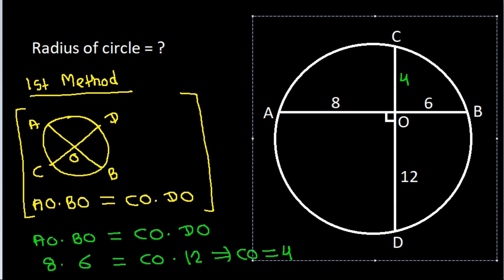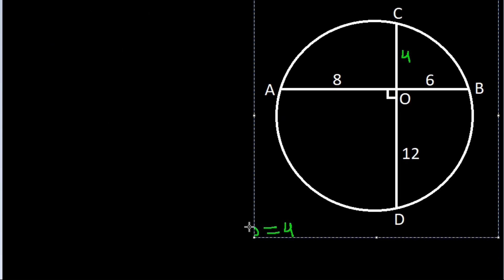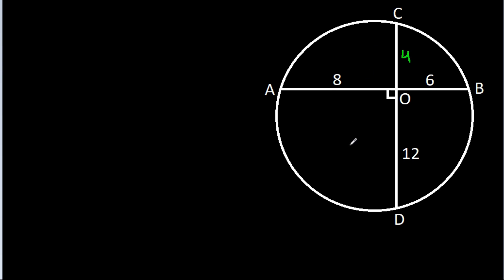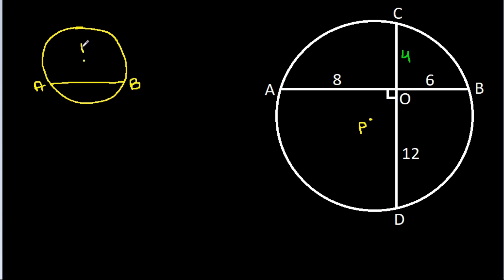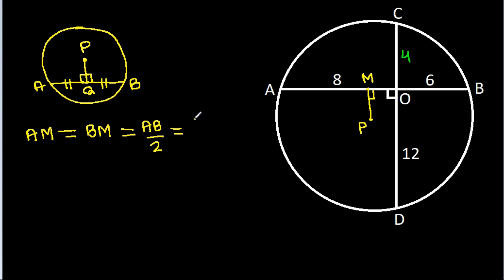Now, suppose the center of this circle is P. In any circle, if AB is any chord and P is the center, and if we draw a perpendicular from P — suppose this point is M — then AM equals BM, which equals AB divided by 2, and that will be (8 plus 6) divided by 2, which is 7.